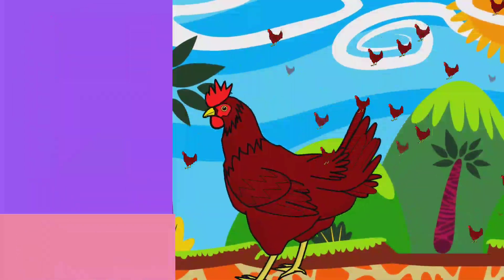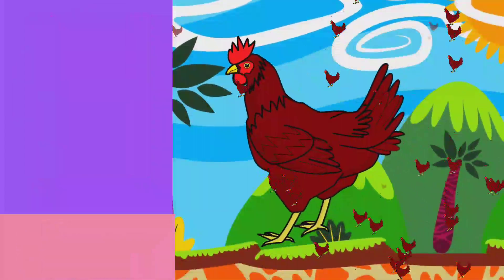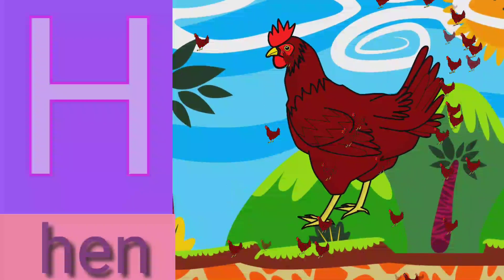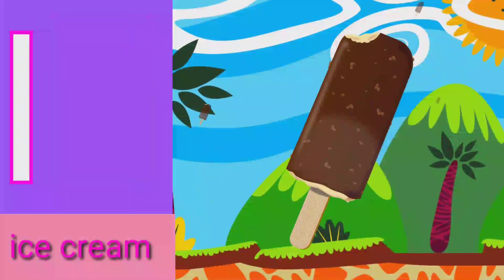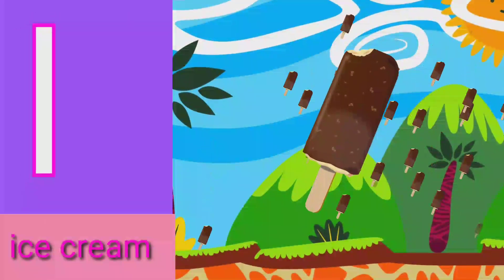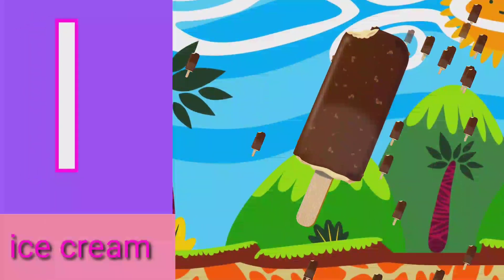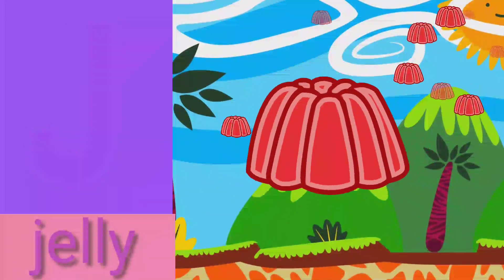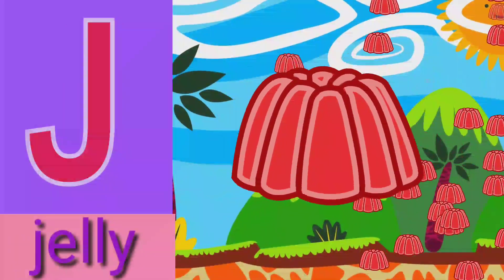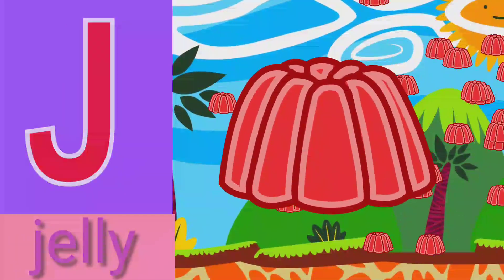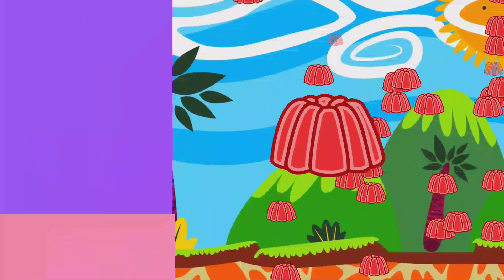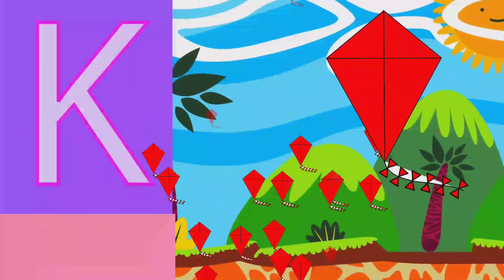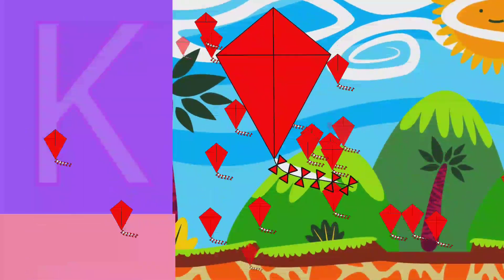S for hen, I for ice cream, J for jelly, K for kite.